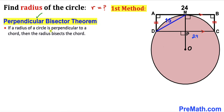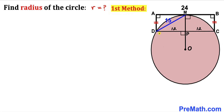Let's recall the perpendicular bisector theorem: if a radius of a circle is perpendicular to a chord, then the radius bisects the chord. Here radius OM bisects chord CD into two equal parts. Since the whole CD length is 24, DP equals 12 and PC equals 12 units. Therefore, since DP is 12, AM is also 12 units.